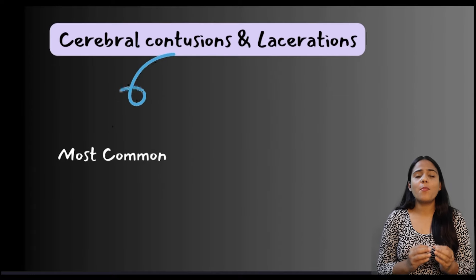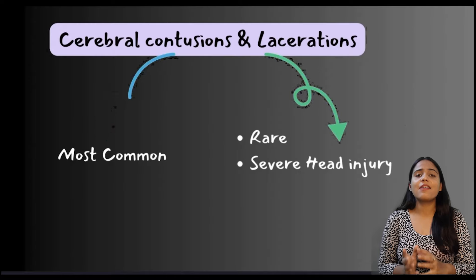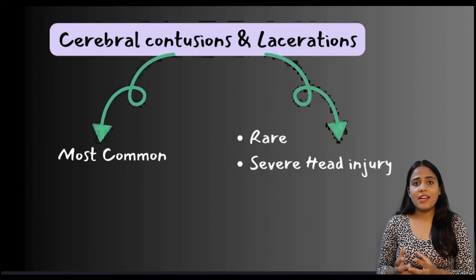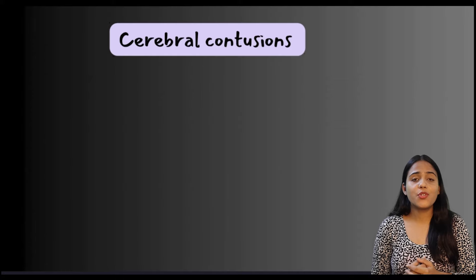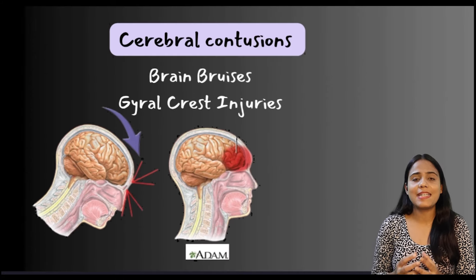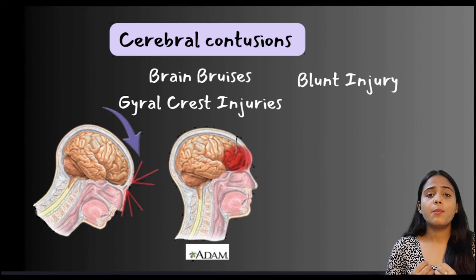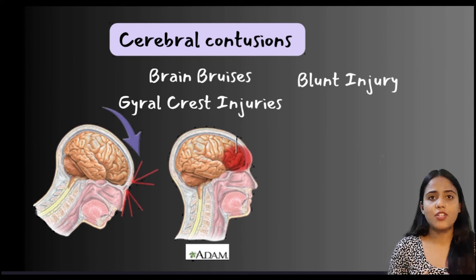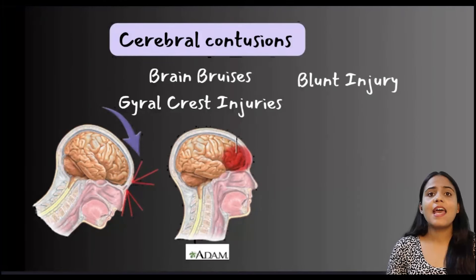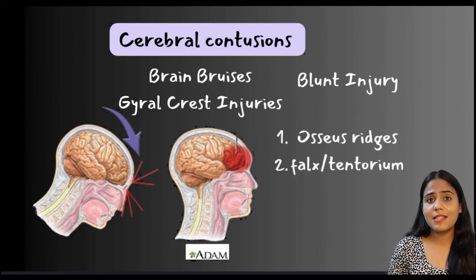Cerebral contusions are the commonest intra-axial traumatic injuries, and lacerations are very rare and seen only with severe head trauma. Cerebral contusions are also known as brain bruises or gyral crest injuries because they are seen at the ridges or crests of the gyri. They are secondary to a blunt force causing sudden change in momentum of the brain, which decelerates and impacts forcefully against the osseous ridges of the skull or the sharp edges of the falx or the tentorium.